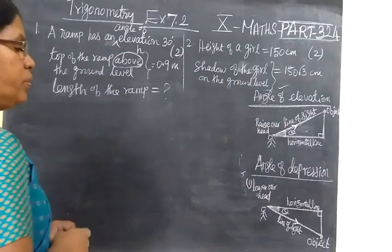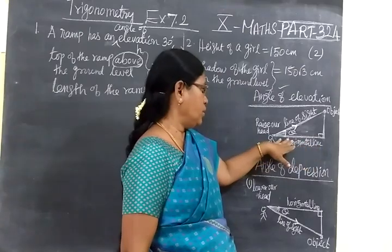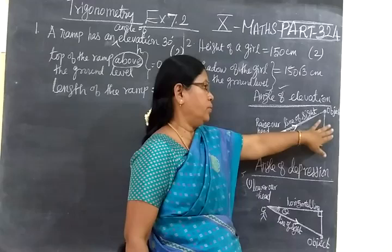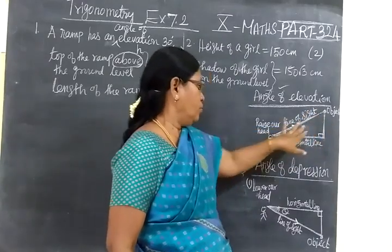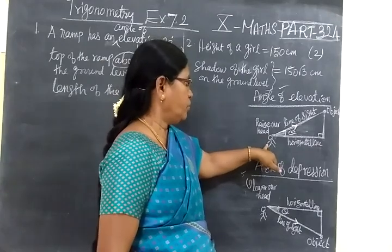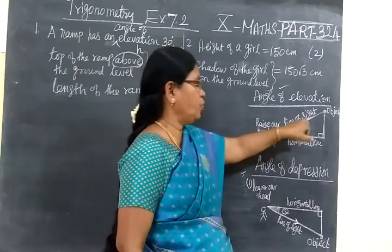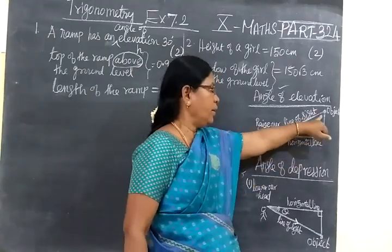Angle of elevation means we view the object above the ground level. Now this is horizontal line. Here is one object or top of a hill, top of the tower like that. So one girl is standing here. She wants to view the object. That means she has to raise her height and see. To view this object above the horizontal line, she has to raise the height and see.